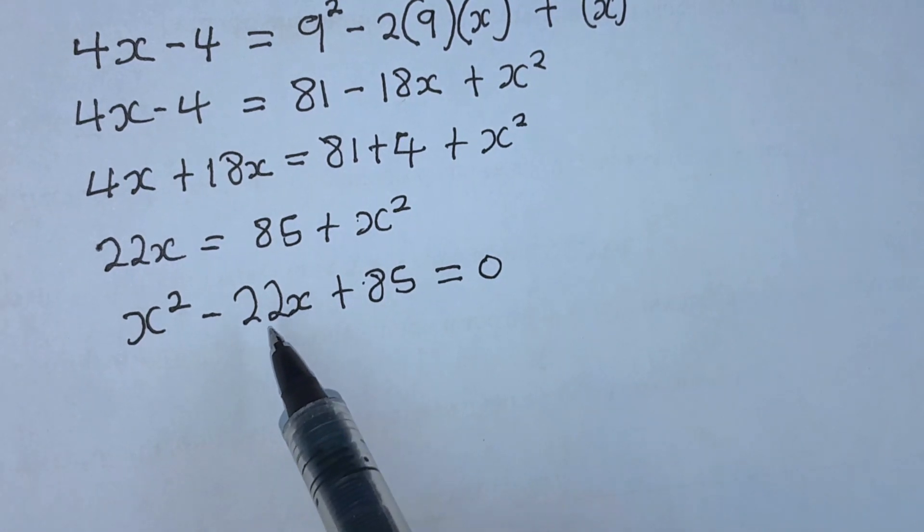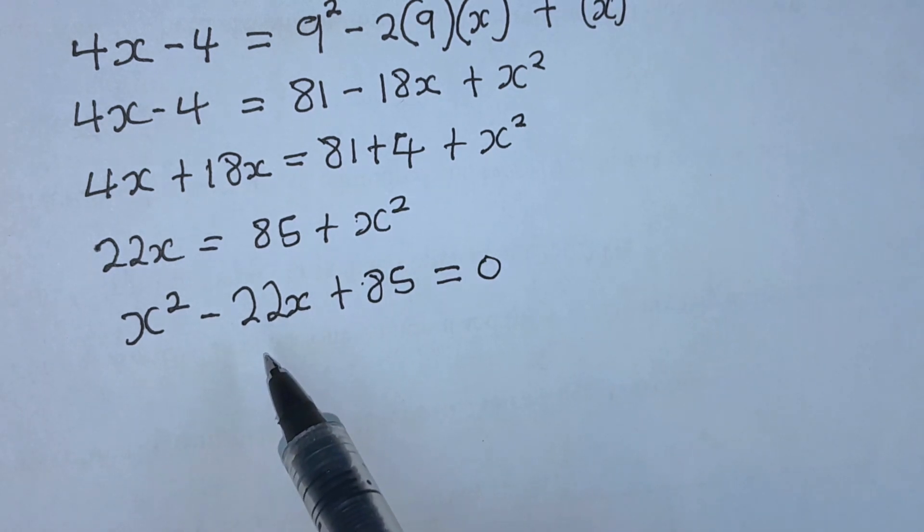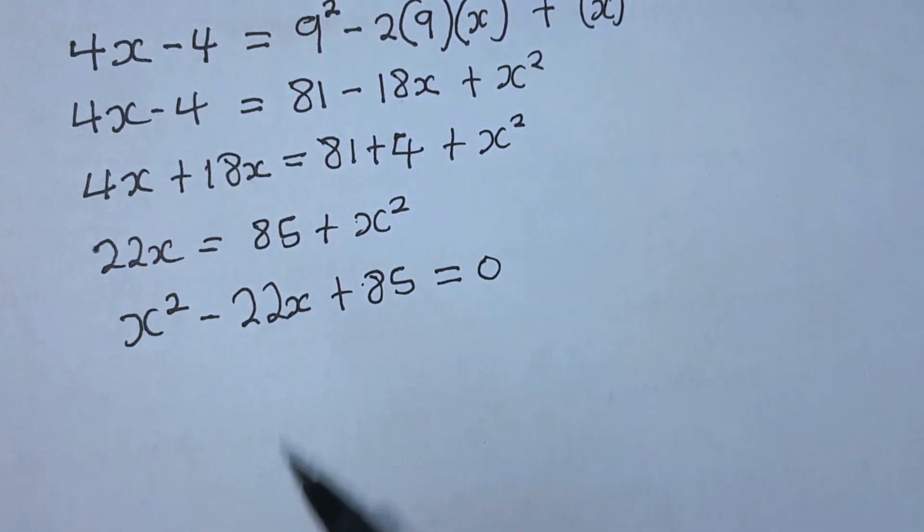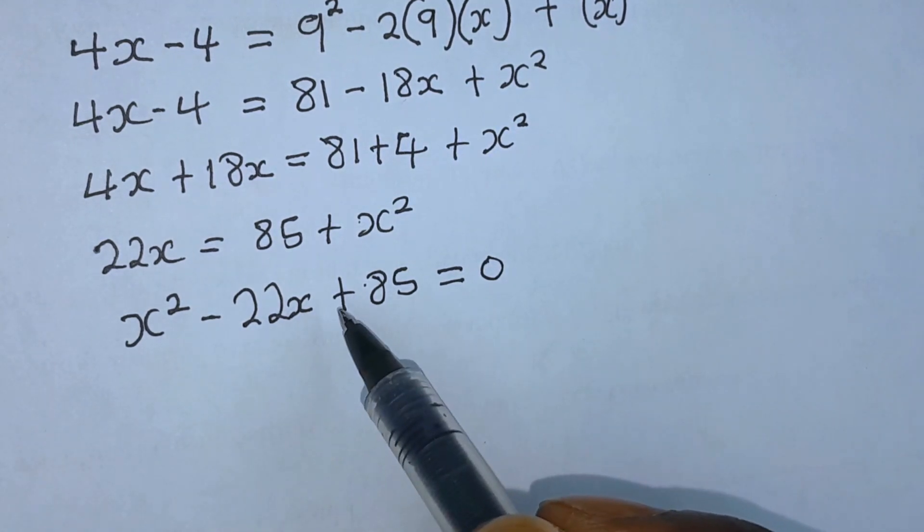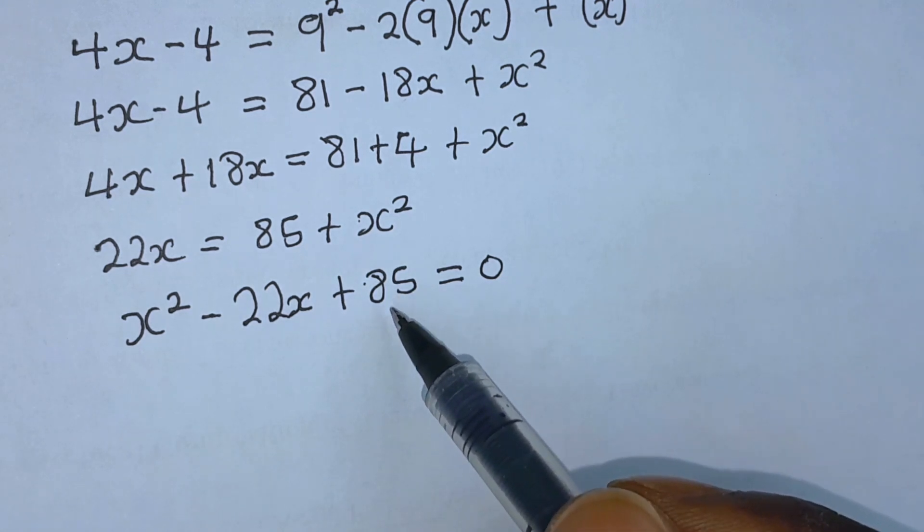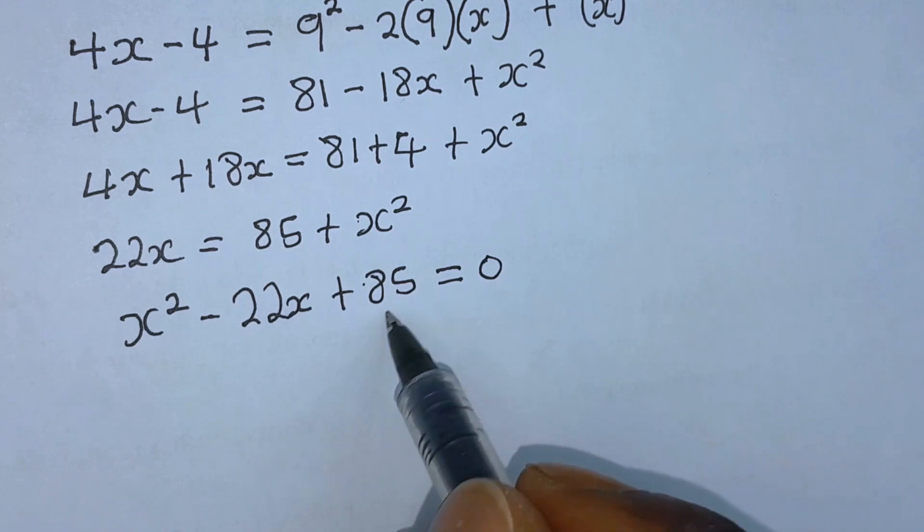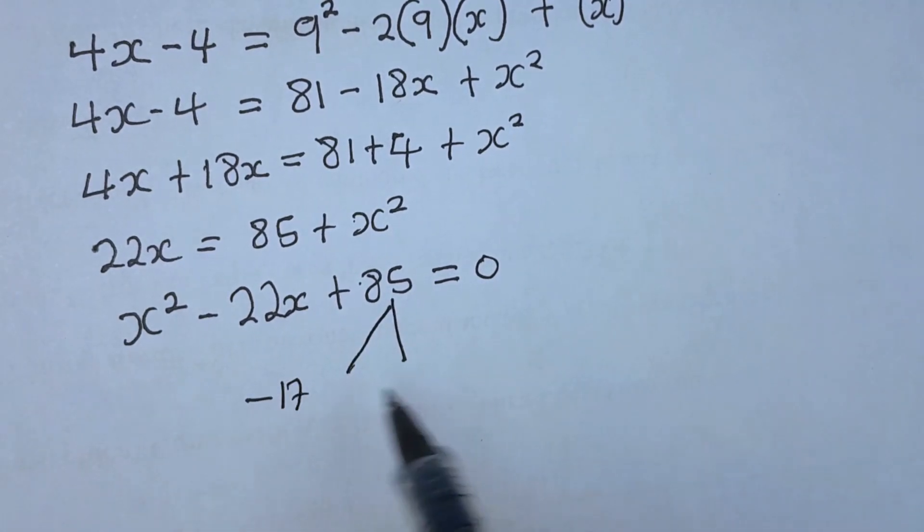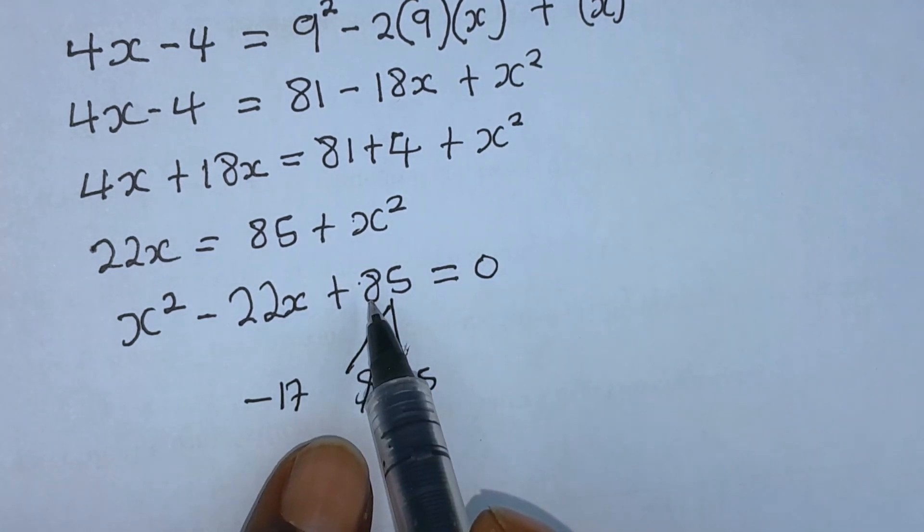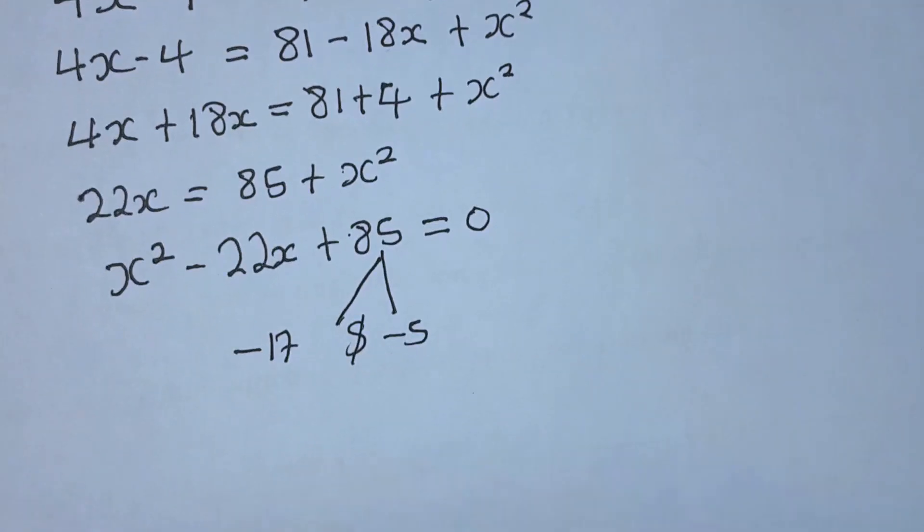From here we can either use the quadratic formula or factorization method. Let me use factorization method to solve this quadratic equation. To factorize, we have to find two numbers that when multiplied give us 85, and when added give us minus 22. I think the numbers are minus 17 and minus 5, because minus 17 times minus 5 gives 85, and minus 17 plus minus 5 gives us the middle term.